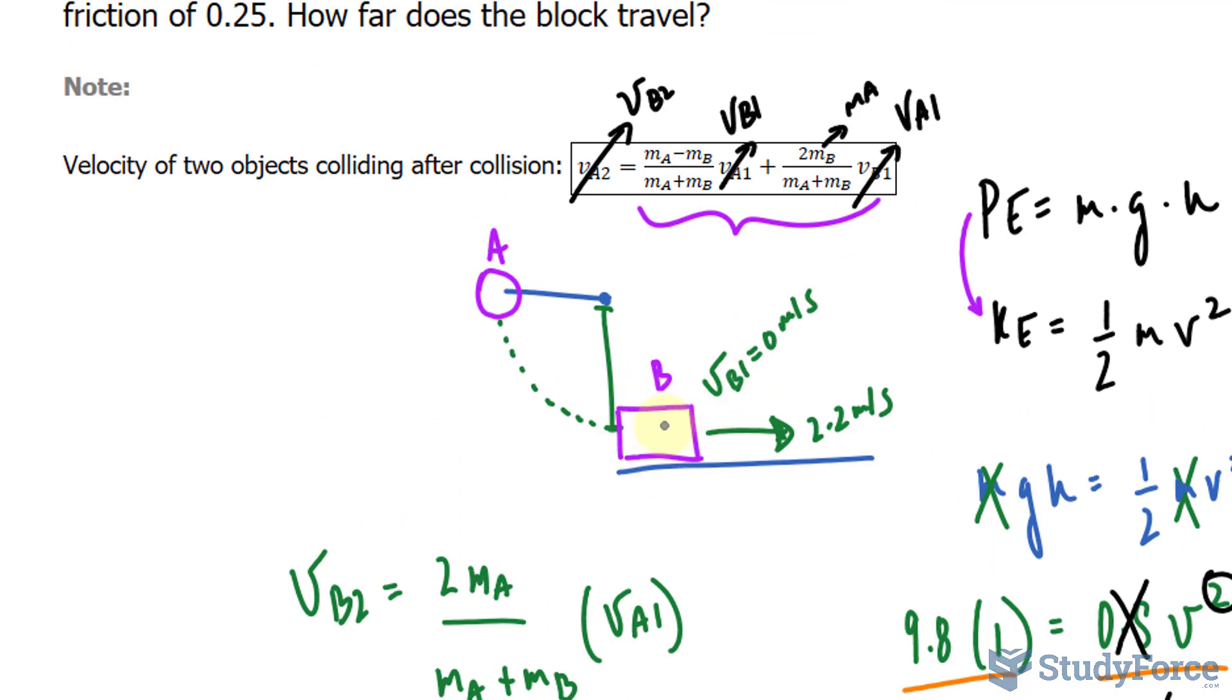And all of that kinetic energy that it exhibits, I can calculate the kinetic energy of this block now using the formula before. KE is equal to half times its mass of 3 kilograms times the velocity of 2.2 raised to the power of 2. All of that kinetic energy will go into the work required to overcome the friction from the ground.